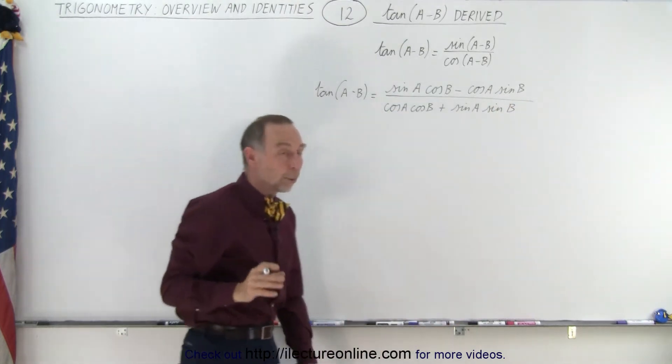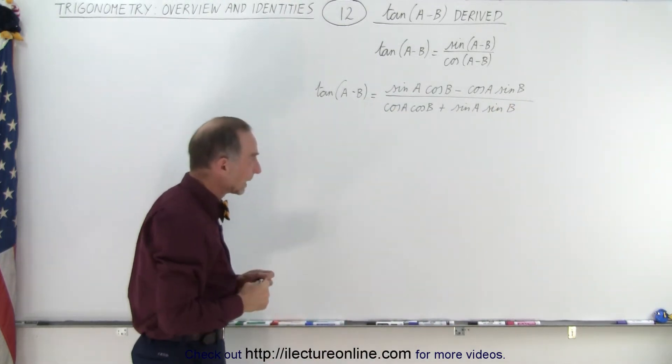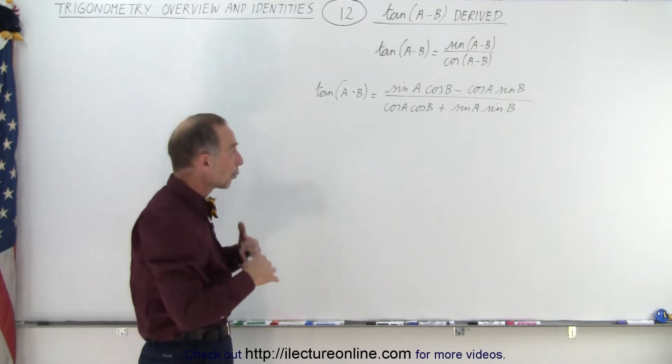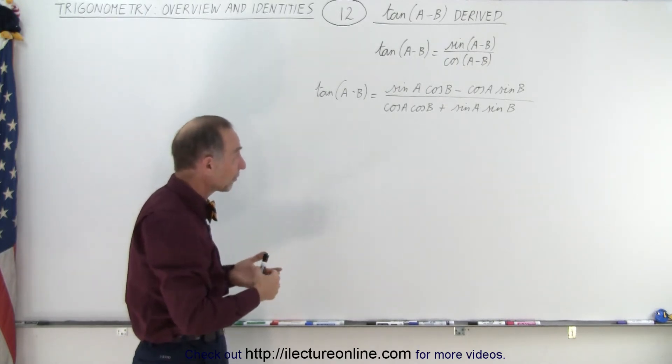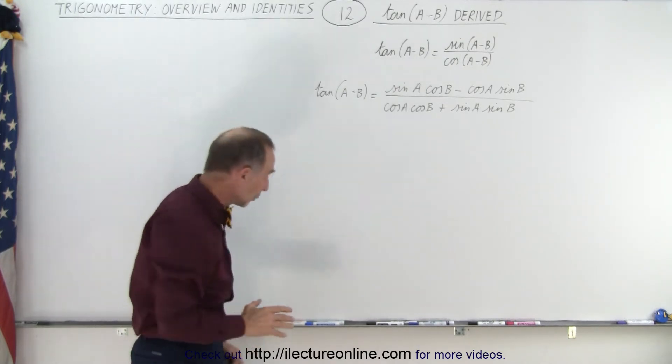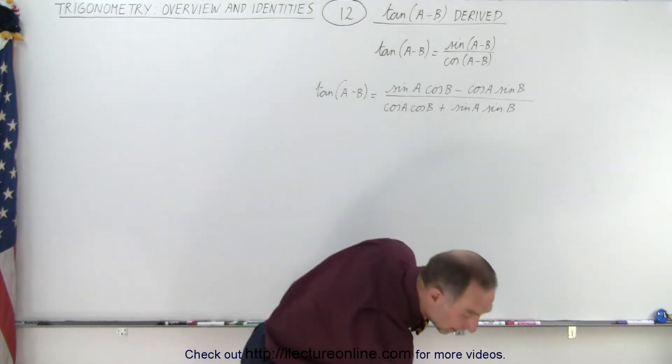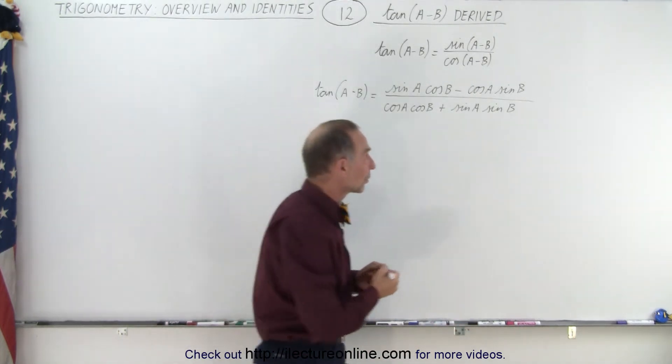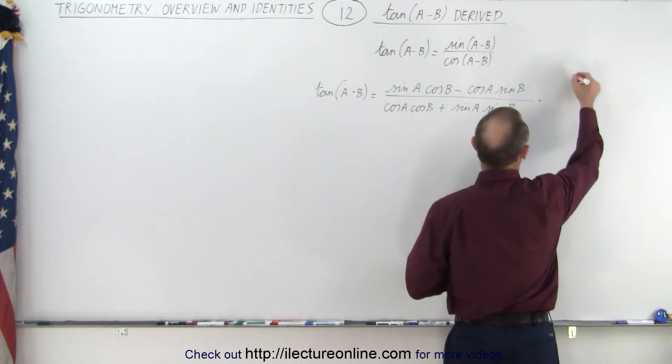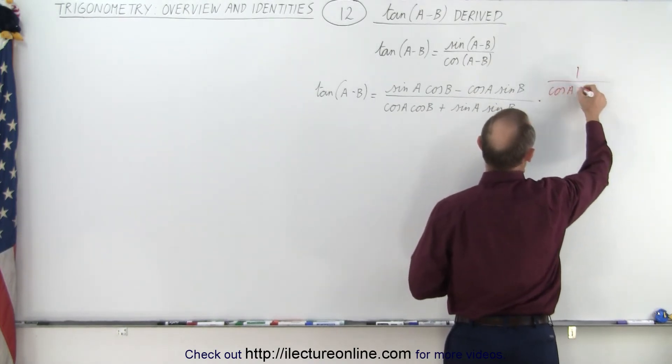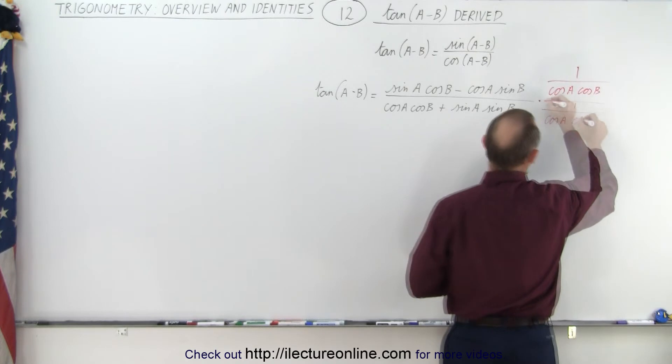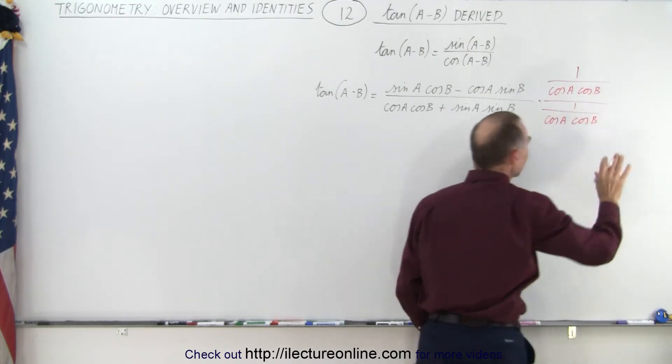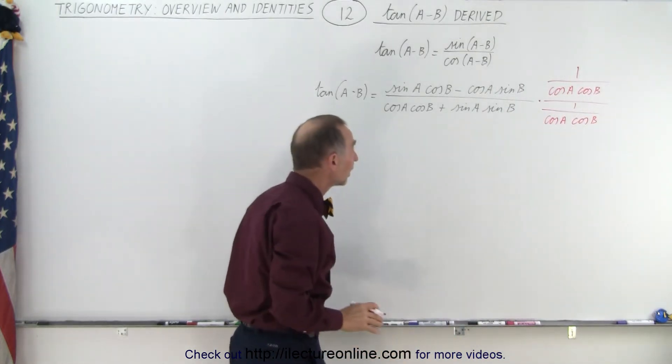So that was easy enough, but now what do we do with that fraction? It turns out, again, you're trying to get rid of all the cosines of A and the cosines of B. To do that, we do the exact same thing as we did in the previous video. We multiply both the numerator and the denominator by one over the cosine of A times the cosine of B. That way we eliminate all the cosines in there.